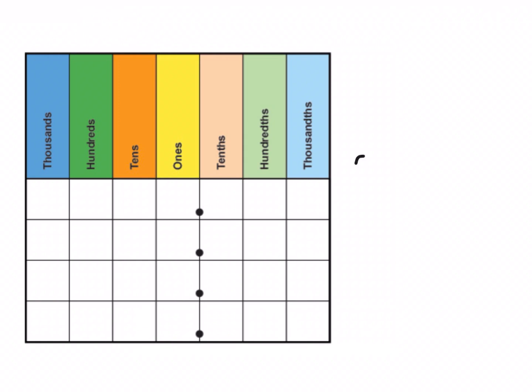So first question, let's do 320 divided by 10. If I was putting it in my place value chart, I'd put 3 in the hundreds, 2 in the tens, and 0 in the ones.